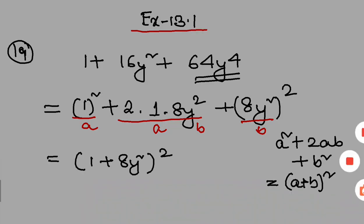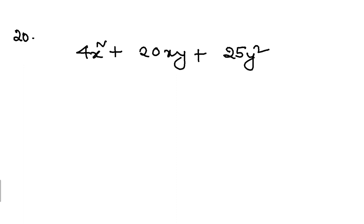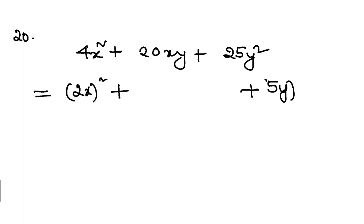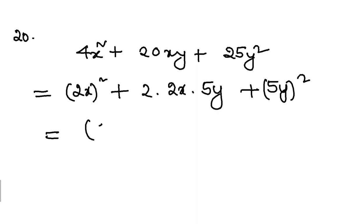Let's go to question 20. Same process. 4x square can be written as 2x whole square, and 25y square can be written as 5y whole square. After that, I will write 2 into 2x into 5y: 2 into 2 is 4, 4 into 5 is 20, giving 20xy. This means a square plus 2ab plus b square, that is a plus b whole square. Done — that is question 20.